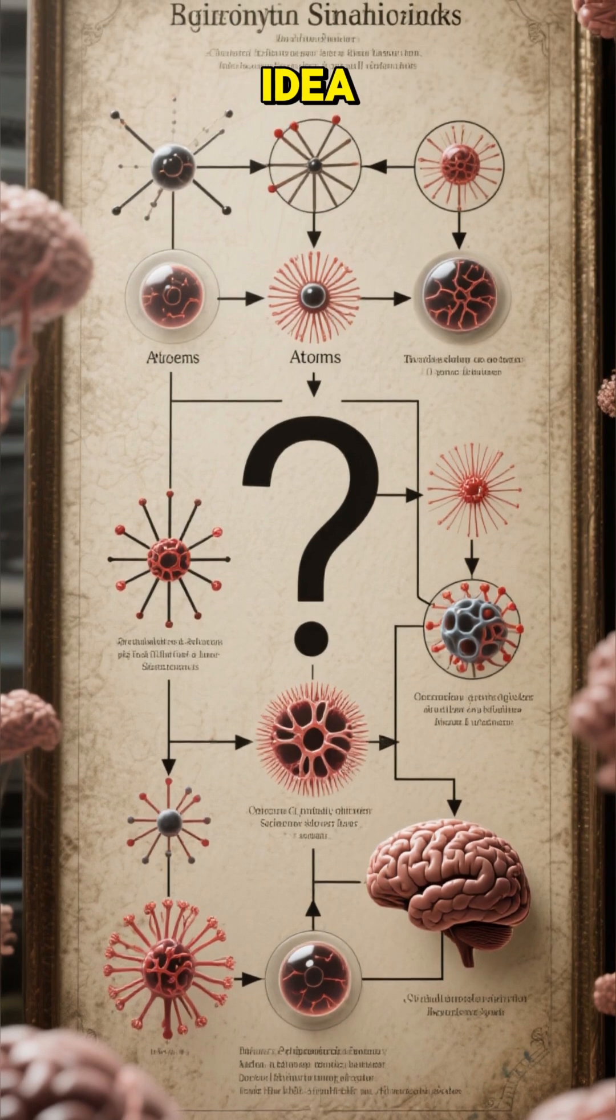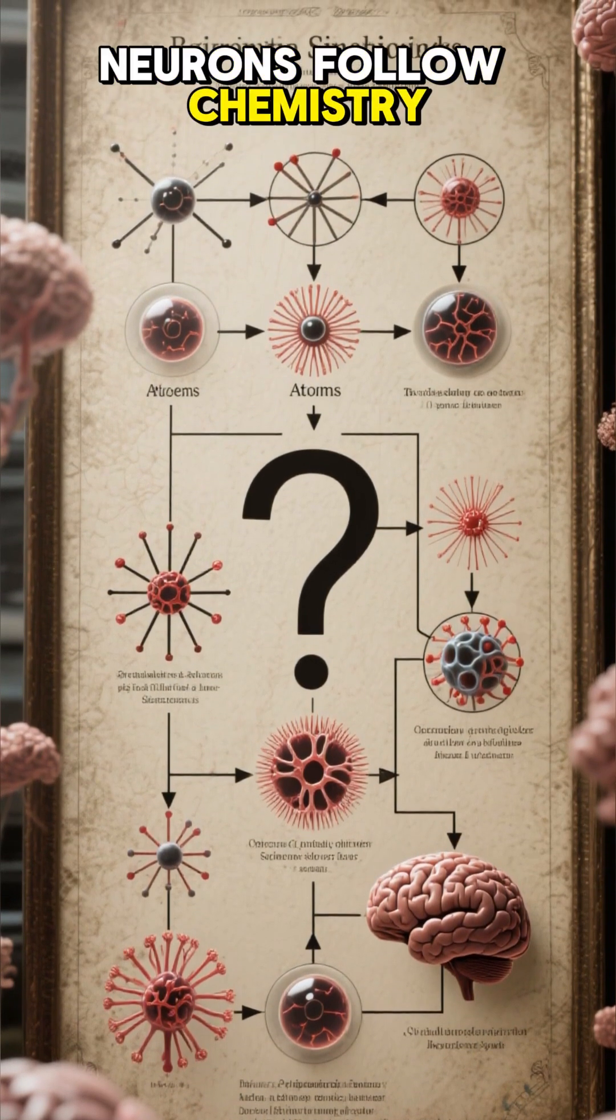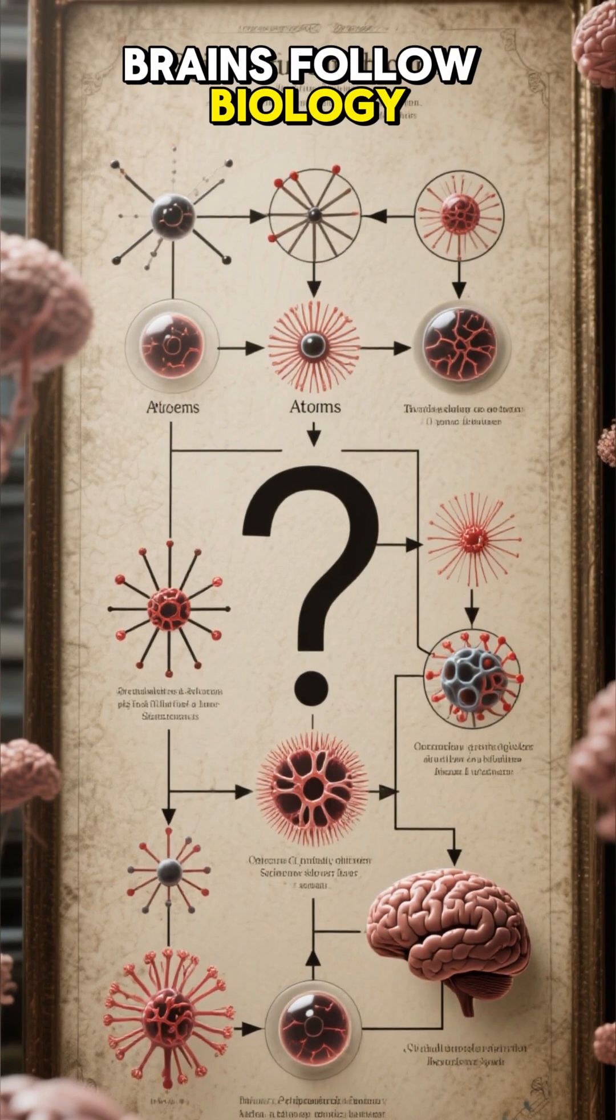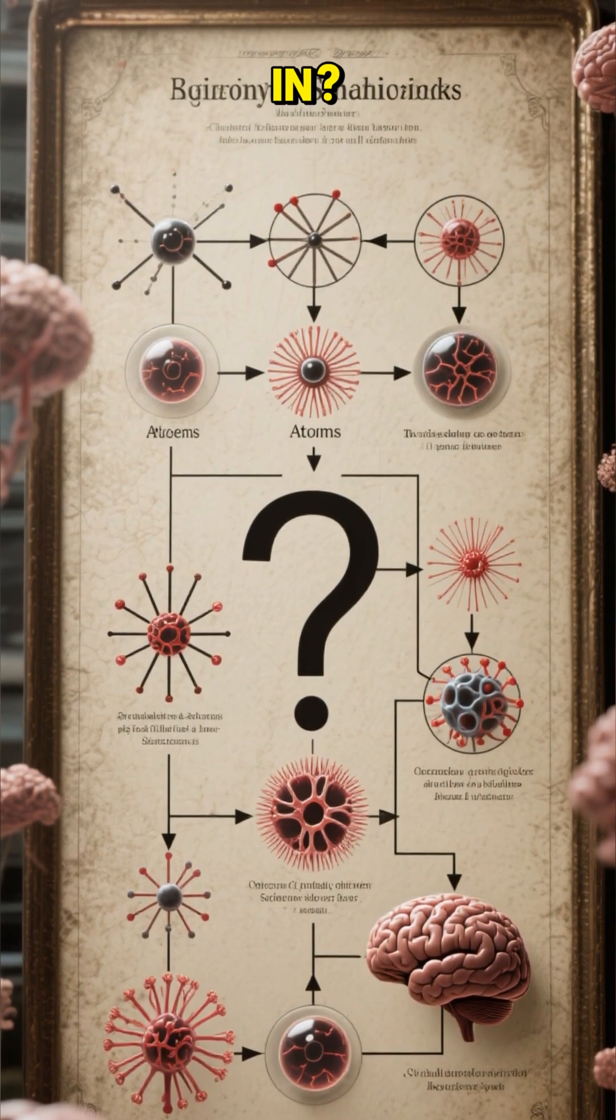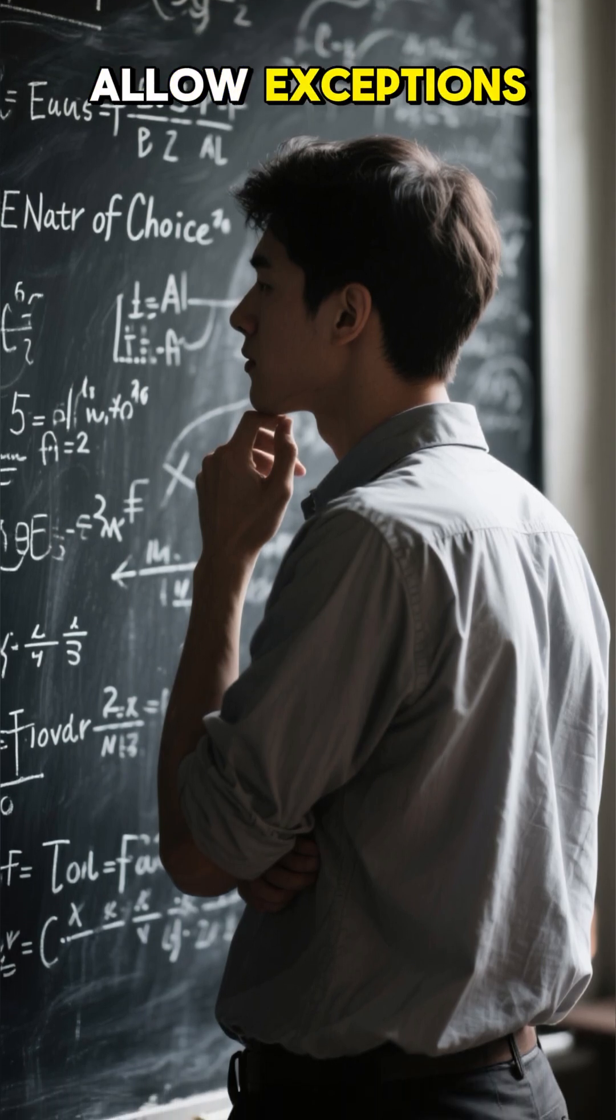Physics supports this idea. Atoms follow laws. Neurons follow chemistry. Brains follow biology. So where does free will fit in? If your brain obeys physics, and physics doesn't allow exceptions, what exactly is choosing?